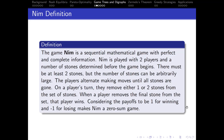Let's talk about the game Nim. Nim is a sequential mathematical game with perfect and complete information, played with two players and a number of stones determined before the game begins. There must be at least two stones, but the number can be arbitrarily large. Players alternate making moves until all stones are gone. On a player's turn, they can remove either one or two stones. The player who removes the final stone wins. If you consider the payoff to be one for winning and negative one for losing, Nim is a zero-sum game.